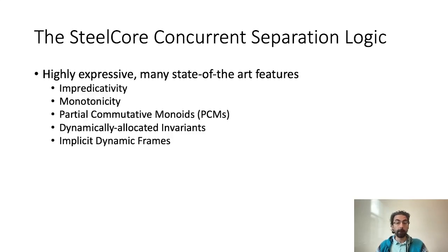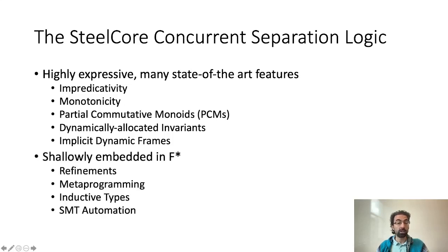SteelCore has many features you expect from state-of-the-art concurrent separation logics. It is an impredicative logic which provides all the standard separation logic connectives such as star, magic wand, conjunction, or quantification. Its memory model is based on partial commutative monoids, and it supports reasoning in a style akin to implicit dynamic frames while also enabling dynamically allocated invariants in concurrent programs.